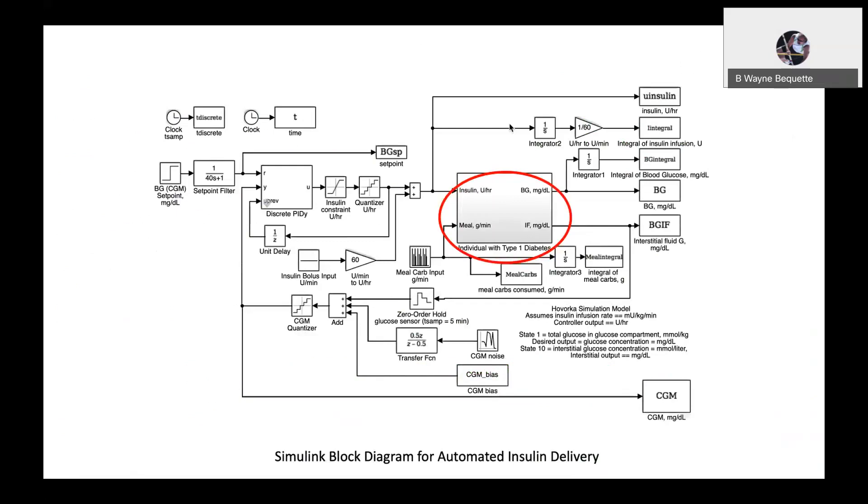This is the block diagram in Simulink. I've embedded those differential equations inside this Simulink block that's encircled in red. There's also a discrete PID controller that's simulated. If you want to do open-loop simulations, you simply set the proportional gain equal to zero for that controller. If you give an insulin infusion related to the meal, then that's considered a manual infusion. The meal carbohydrates are simulated as pulses at breakfast, lunch, dinner, and an evening snack.